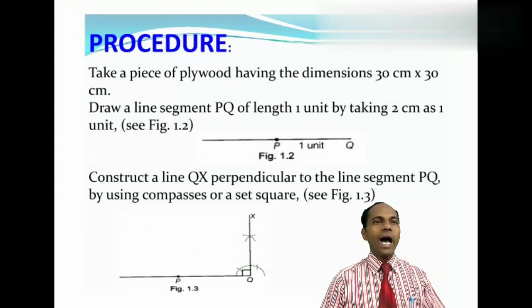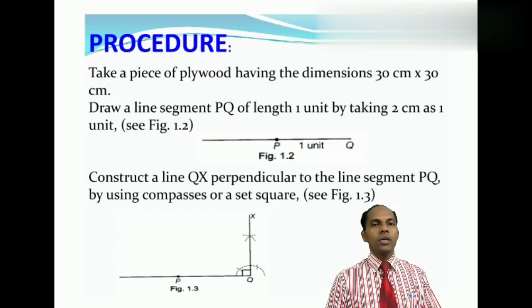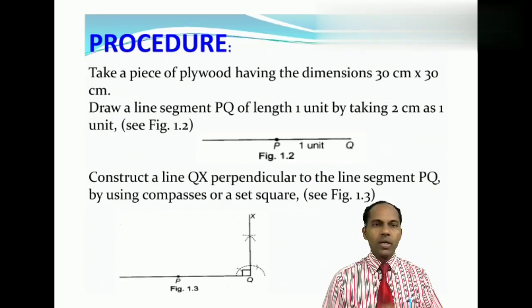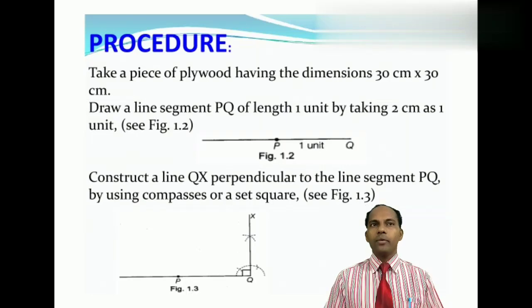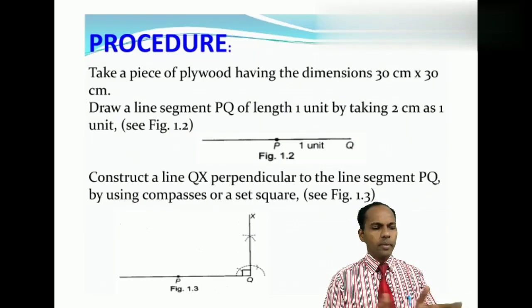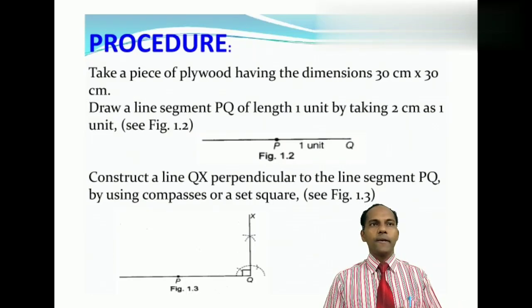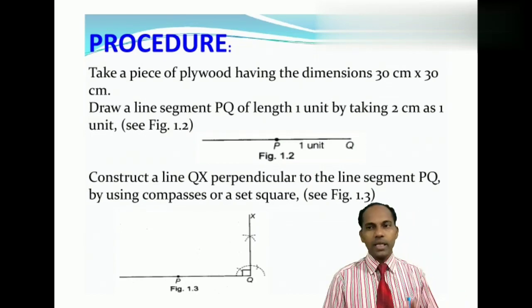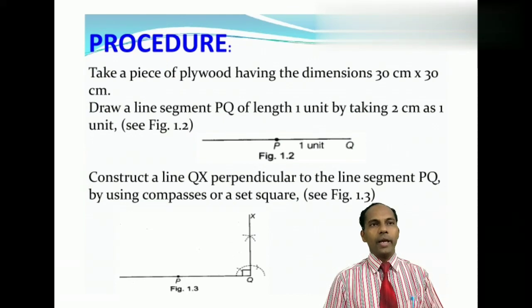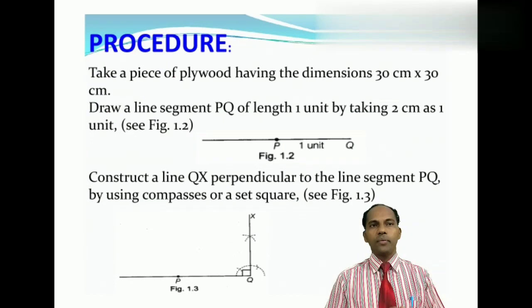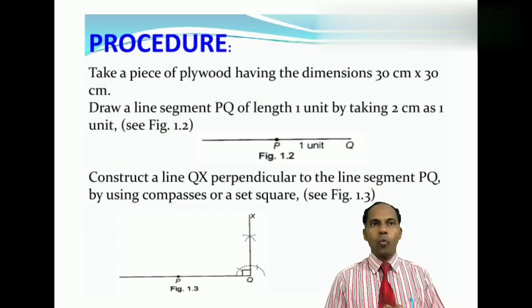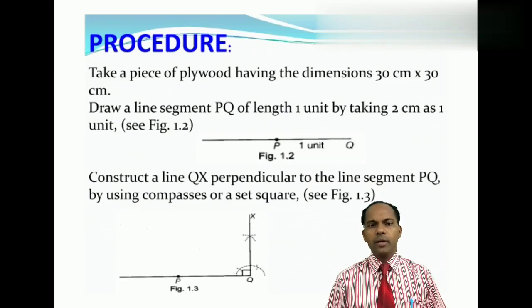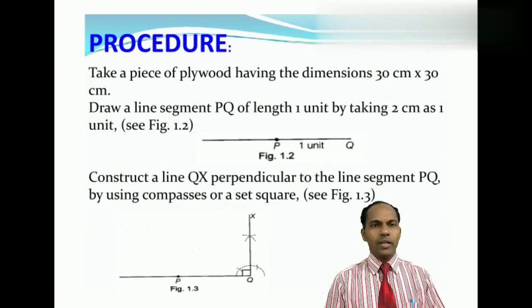Now, how we will draw the square root spiral? First of all, we have to take a plywood having a dimension. Whatever may be the dimension, the plywood will take. And we have to take an A4 size paper on it. We have to draw a line PQ of a length 1 unit by taking 3 cm or 2 cm as usual for 1 unit as a choice.